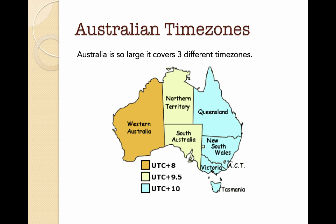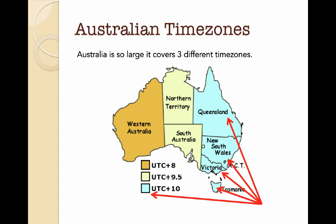Here is a map of our country. On the left hand side we have Western Australia, and the legend says that Western Australia is UTC plus 8. In the central part of Australia we have Northern Territory and South Australia, which is UTC plus 9.5. On the eastern side — Queensland, New South Wales, ACT, Victoria and Tasmania — we have UTC plus 10.